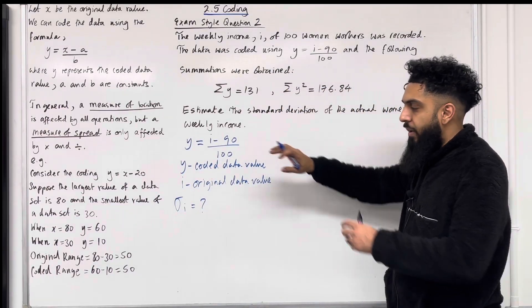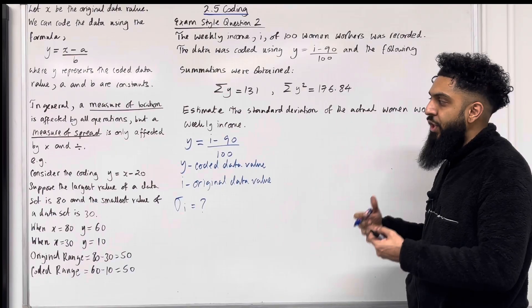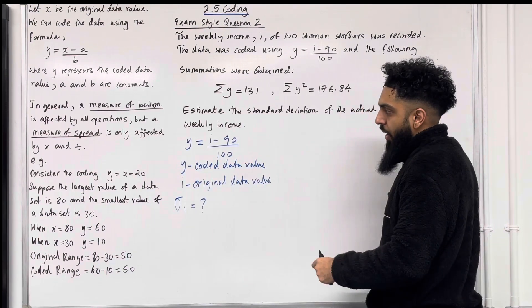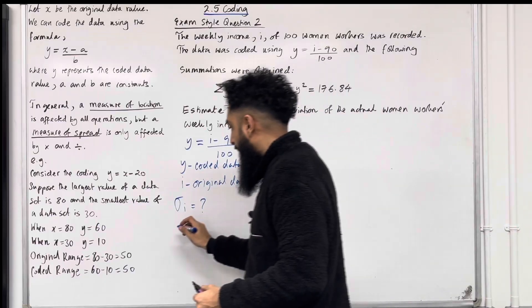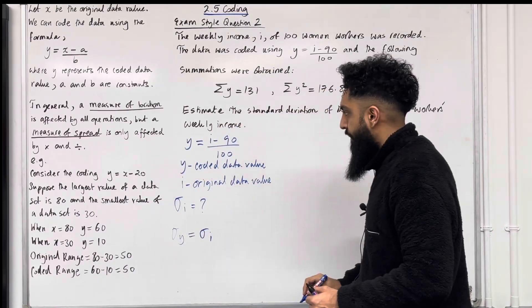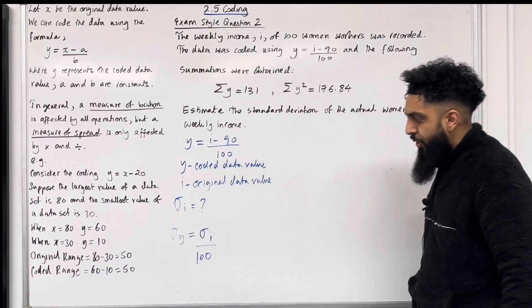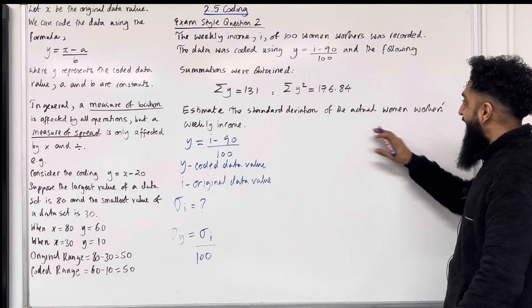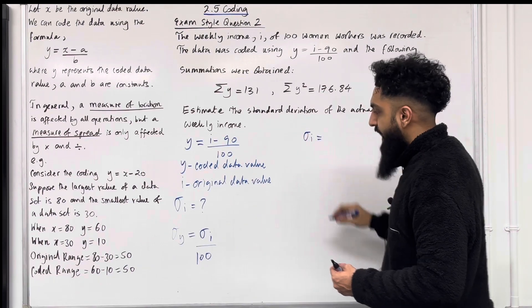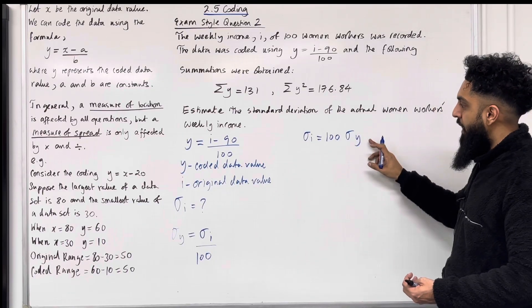Going back to the coding, I can modify it to include standard deviations. A standard deviation is a measure of spread, and a measure of spread is only affected by multiplication and division. So we can neglect the minus 90. Modifying in terms of standard deviations: sigma y equals sigma i divided by 100. To find sigma i, we multiply both sides by 100, giving sigma i equals 100 multiplied by sigma y. So we need sigma y, the coded standard deviation.